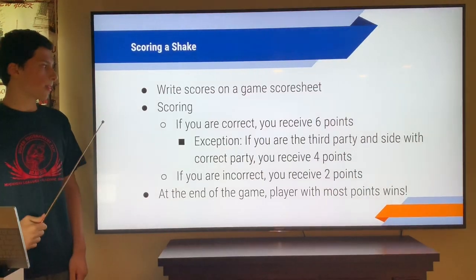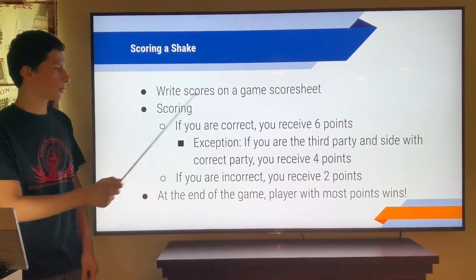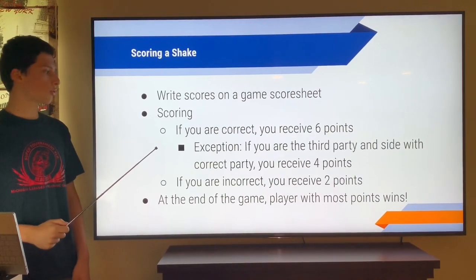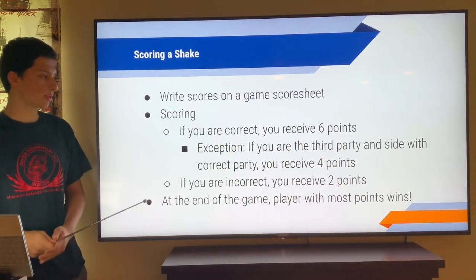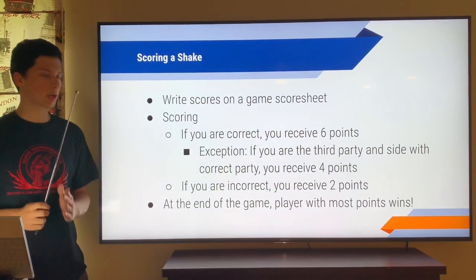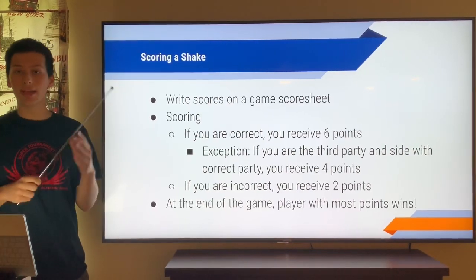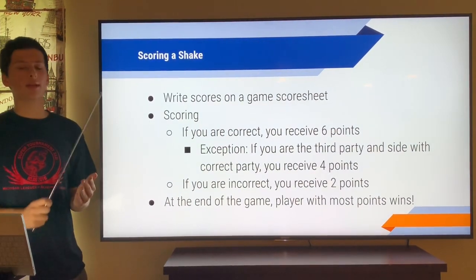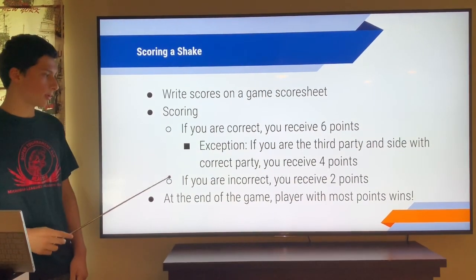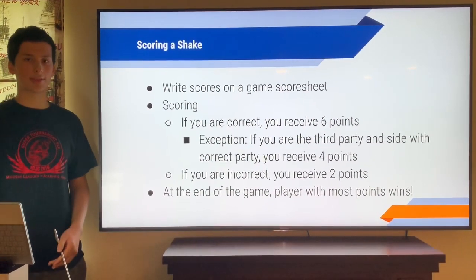Finally, we're down to scoring. Once the game has ended, you have to write the scores in the game's score sheet. So, regarding the scoring, if you're correct, you receive six points. There's an exception to this, if you are the third party and you side with the correct party, you only receive four points. So the third party, since they didn't make the challenge, they didn't get to the challenge first, they'd only get four points. If you're incorrect, you receive two points, and at the end of the game, the player with the most points wins.